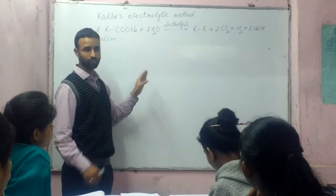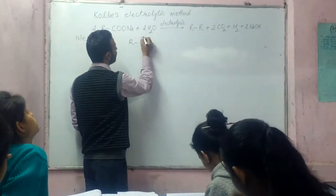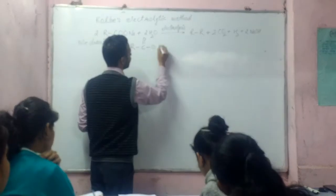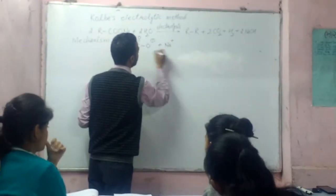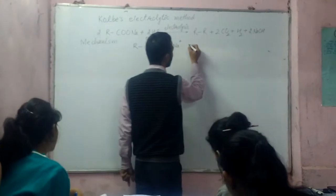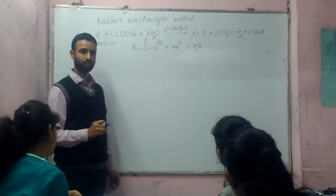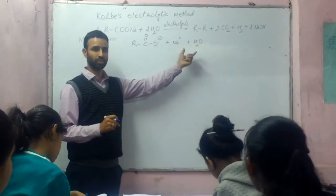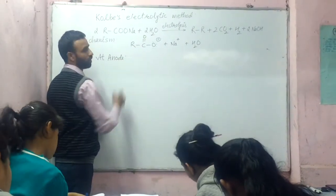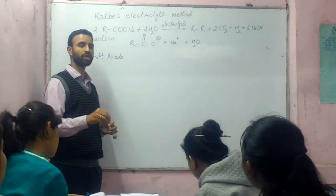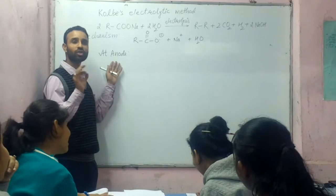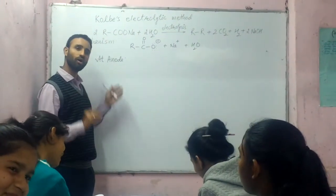What is the reaction mechanism? When sodium salt of carboxylic acid is in aqueous solution, we have these anions in water. When we start electrolyzing it, at anode, which reaction takes place — reduction or oxidation? It is actually oxidation that takes place at the anode.